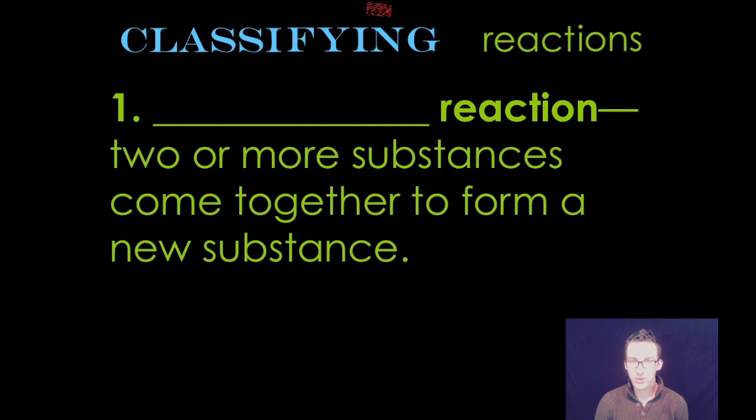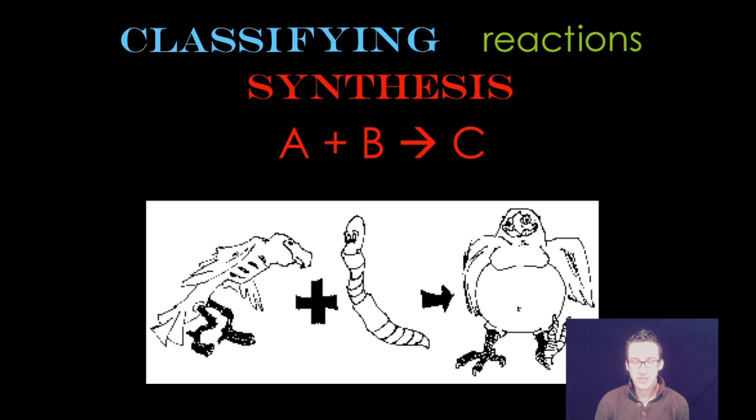Okay, so our first type of chemical reaction is a synthesis reaction, where two or more substances come together to form a new substance. As you look at your screen there, you've got a general formula for a synthesis reaction, in which you have two, or sometimes three, or sometimes four, but the important thing is they're coming together to form one thing.